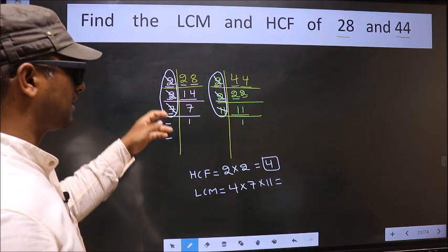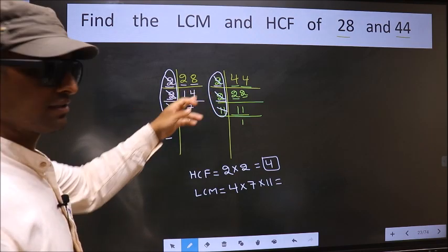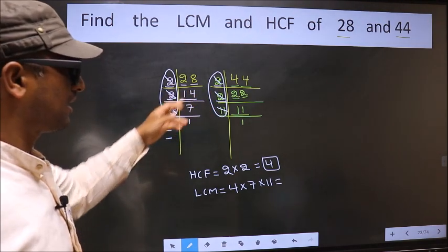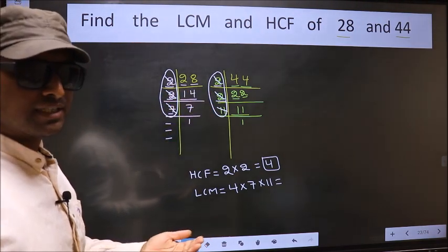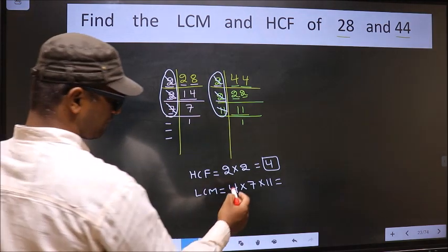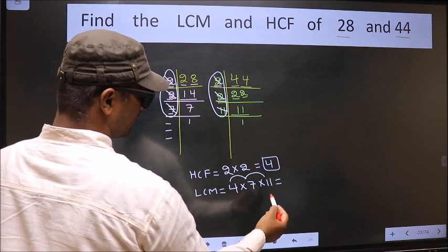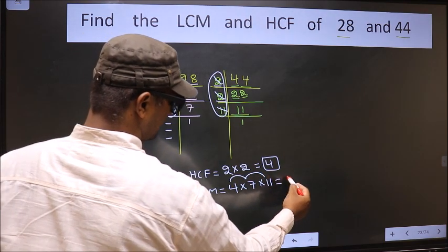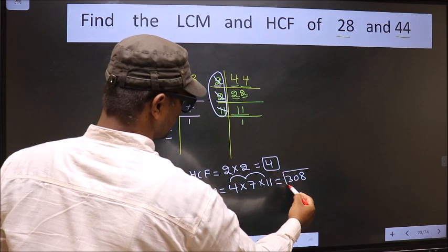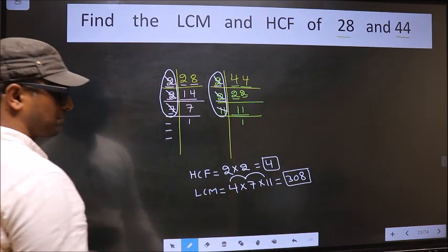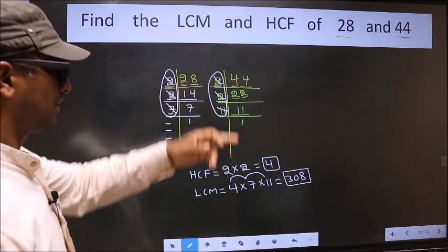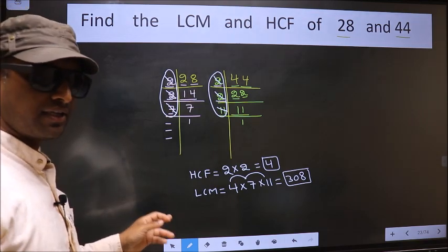Now each number has been cut. So our LCM is 4 times 7, which is 28, times 11. We get 308. This is our LCM. Am I clear?